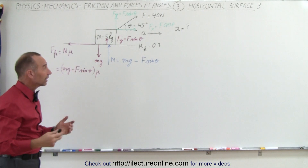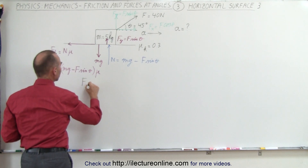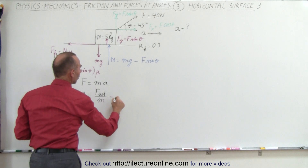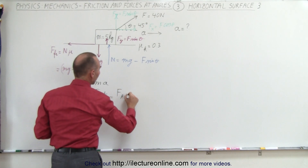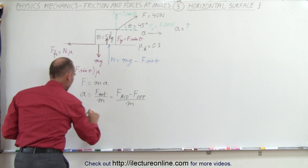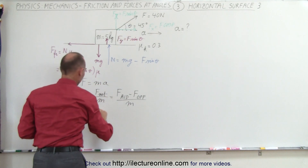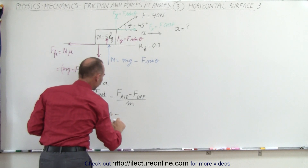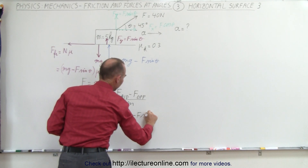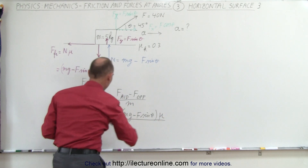Now we're ready to start calculating the acceleration, assuming it's going to be in the direction to the right. We know that F equals ma, which means the acceleration equals the net force on the block divided by the mass — all the forces aiding the acceleration minus all the forces opposing it, divided by the mass. So a equals F times cosine of theta minus the friction force, which is (mg minus F sine theta) times mu, all divided by the mass of the block.